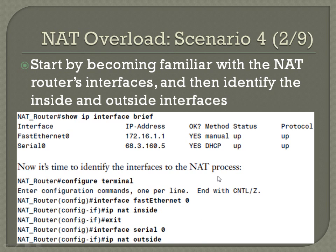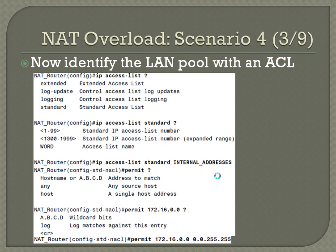Now identify the pool with a named ACL. We'll use a named access list: IP access-list standard internal_addresses. Once the name is entered, it jumps into named ACL configuration mode. Add the permit statement: permit 172.16.0.0 0.0.255.255. That covers the full LAN block. Remember there is an implicit deny after this permit statement.